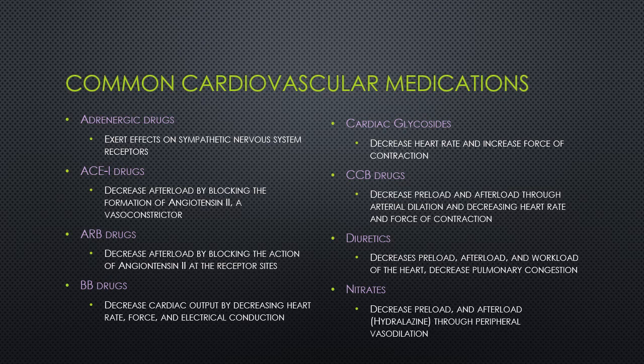Some common cardiovascular medication classes include adrenergic drugs, which are the sympathetic nervous system-mediated medications. ACE inhibitors decrease afterload by blocking the formation of angiotensin 2, which is a powerful vasoconstrictor. ARBs, or angiotensin receptor blocker drugs, decrease afterload by blocking the action of angiotensin 2 at the receptor sites. Beta blocker drugs decrease cardiac output by decreasing heart rate, force, and electrical conduction. Cardiac glycosides, like digoxin, decrease the heart rate and increase the force of contraction, so they are a positive inotrope and a negative chronotrope.